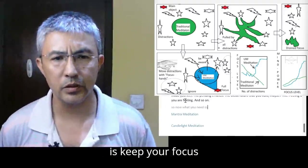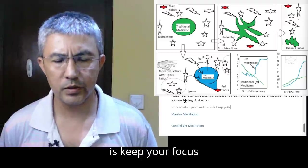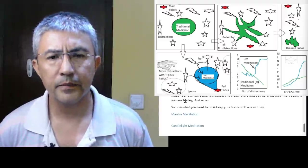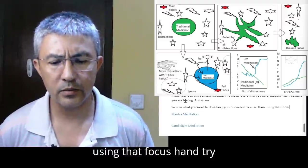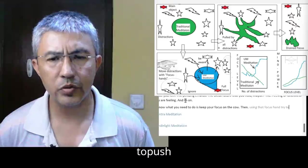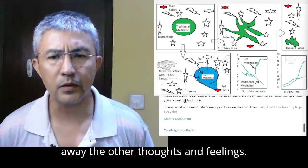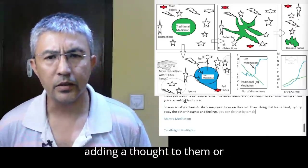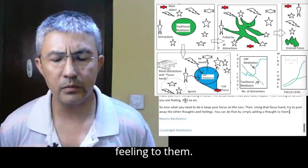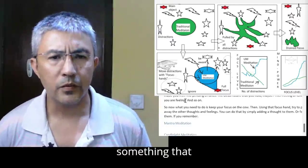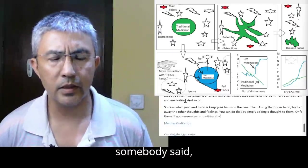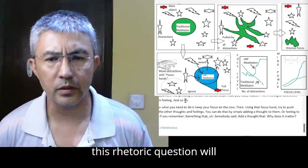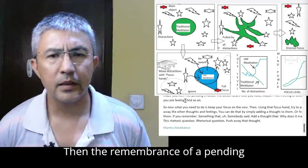So now, what you need to do is keep your focus on the cow, then using that focus hand, try to push away the other thoughts and feelings. You can do that by simply adding a thought to them or feeling to them. If you remember something that somebody said, add a thought that why does it matter? This rhetoric question will push away that thought.